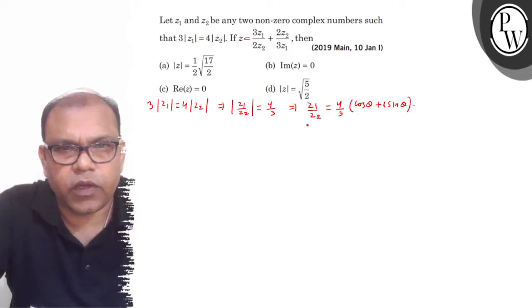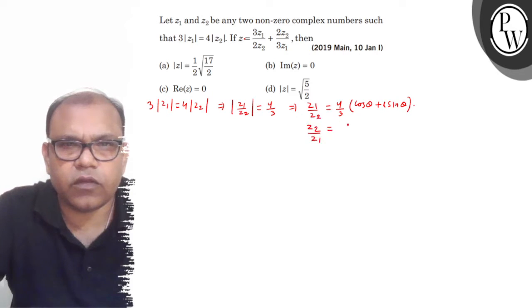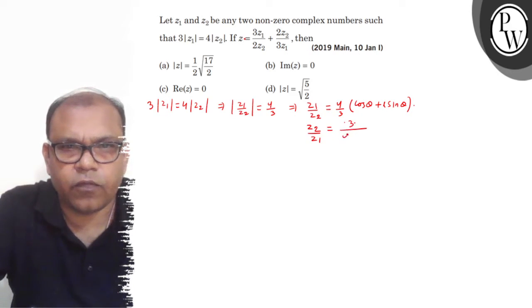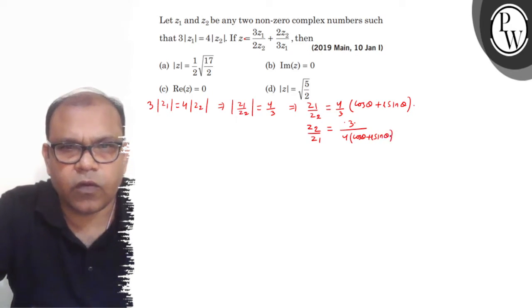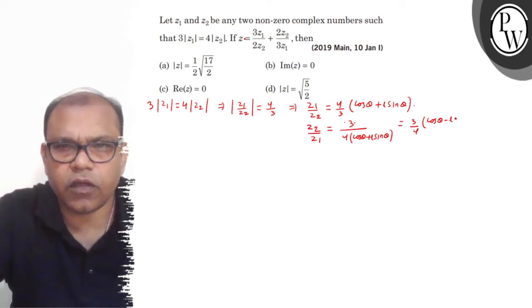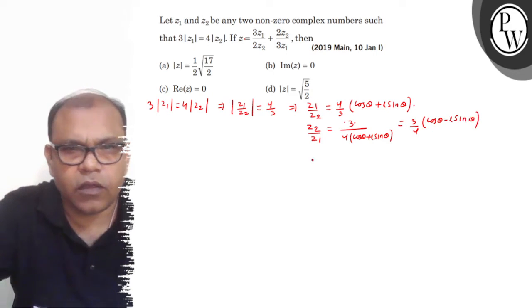If Z2 by Z1 is expressed, it will be 3 by 4 into (cos θ + i sin θ), and its conjugate form is 3 by 4 into (cos θ − i sin θ).